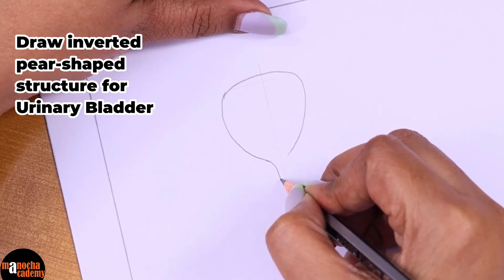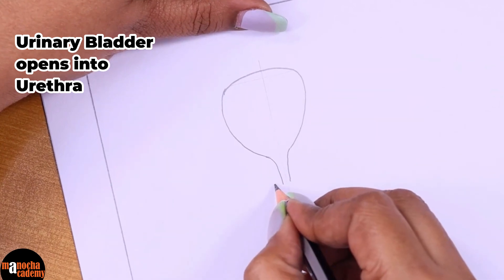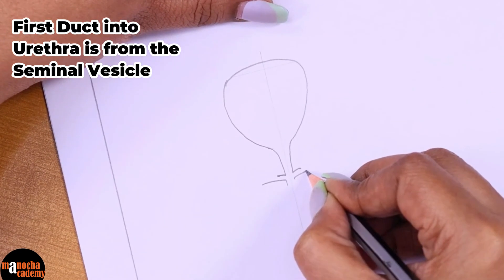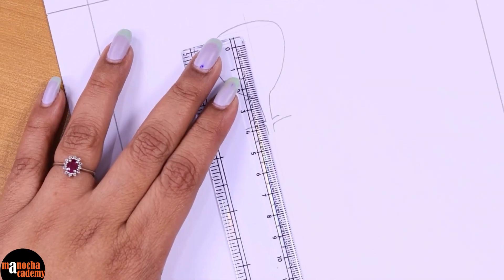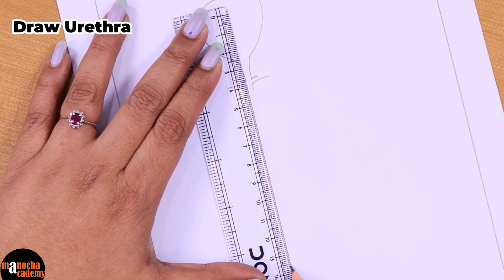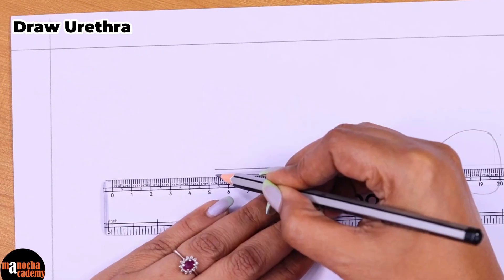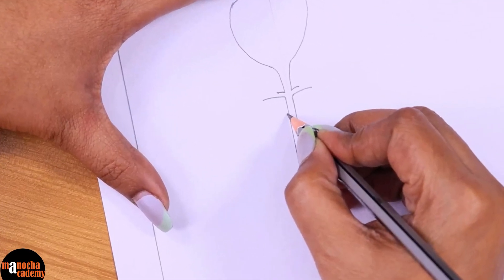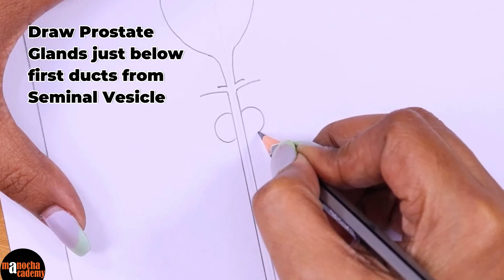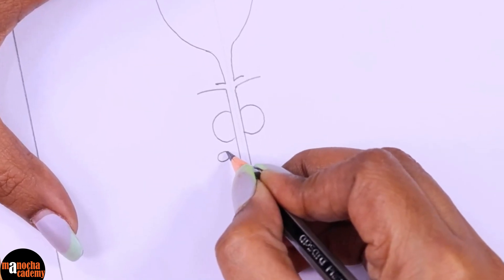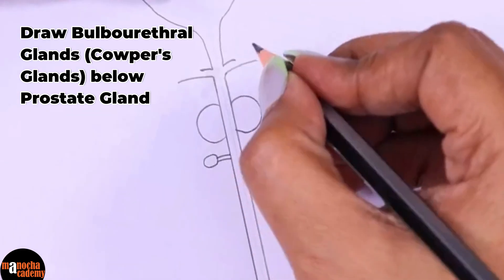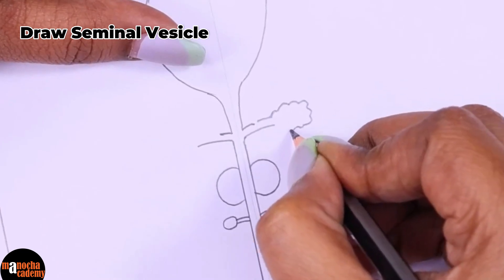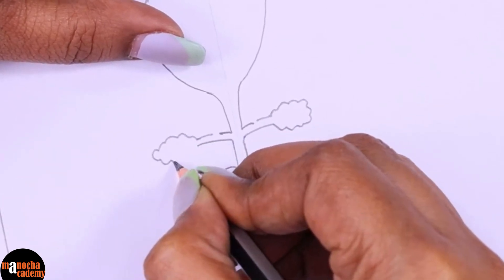Then as you come down into the urethra, the first duct that opens into the urethra is that of the seminal vesicle so I keep one gap like this. Then we straight away come down, use the ruler to draw the entire urethra. Here we will draw the prostate glands and here we will draw two small glands with ducts, these are the bulbo urethral glands. And here we will keep a gap in the duct and we will draw the seminal vesicle.